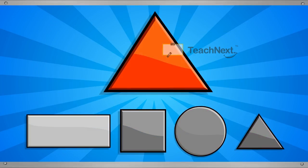A triangle looks like this. To find another triangle, look for the shape that looks the same as the one given.